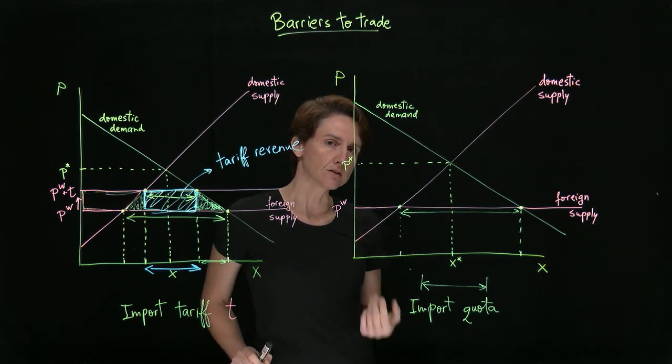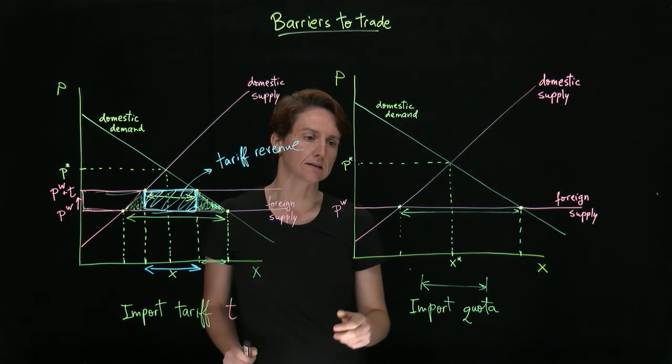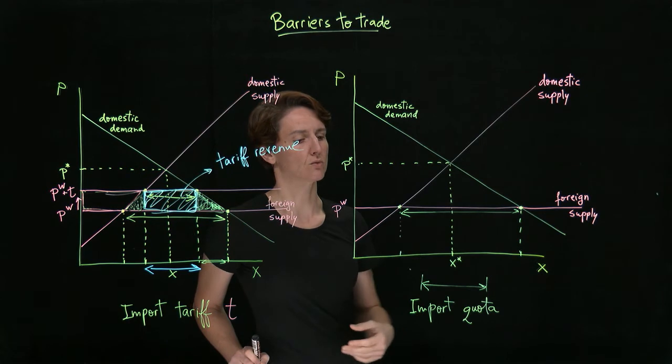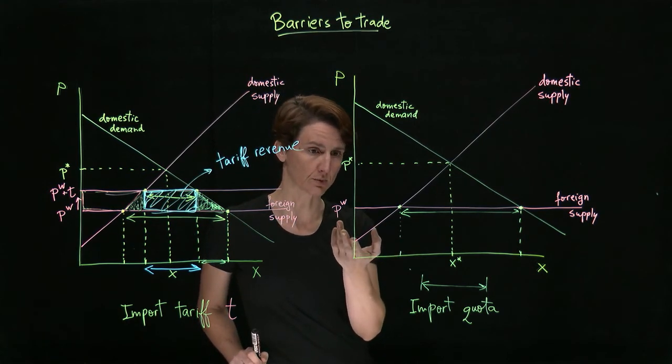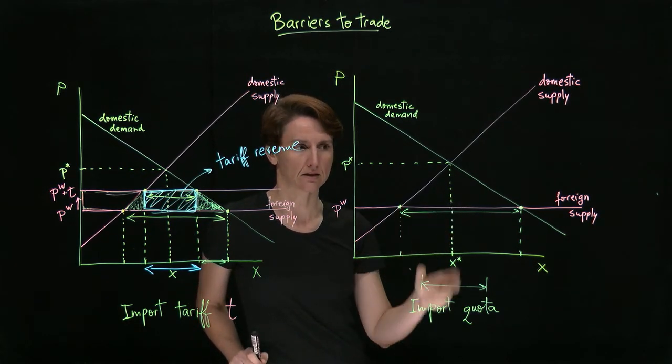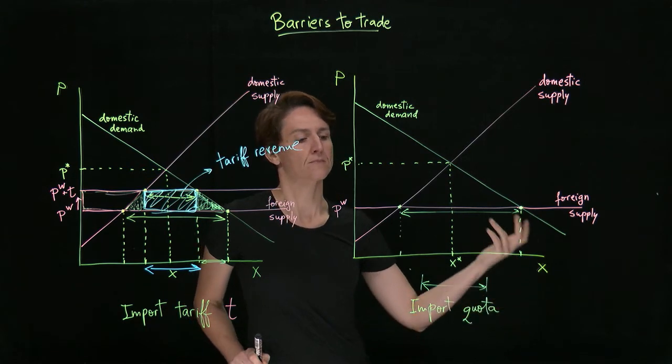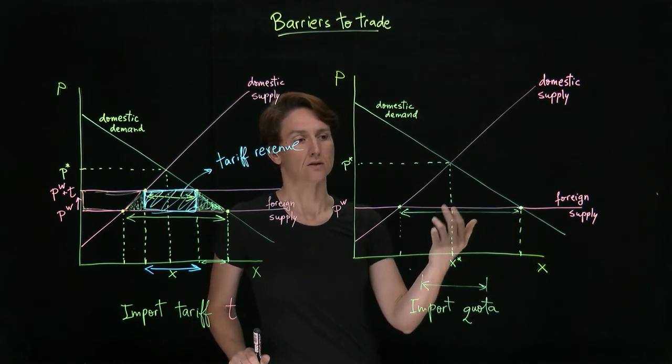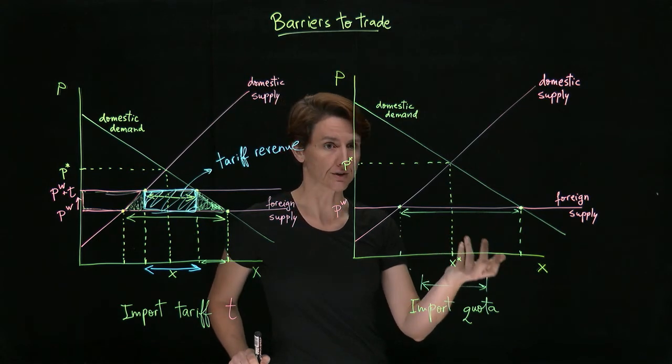Suppose that we're now restricting how much can be imported to this smaller amount. Well, an immediate consequence of that is that there will be remaining domestic consumers who want to purchase more at the world price than imports are allowed. So what will they do whenever there's a shortage? In this case it would be a shortage of foreign goods.